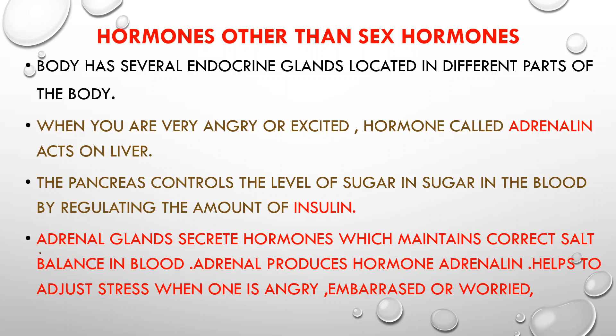In our body we have several endocrine glands located at different parts of the body. Every endocrine gland produces a particular hormone, and every hormone has a specific function. Now let's discuss which hormone is responsible for what. For example, when we are very excited or very angry, which hormone is responsible for that?